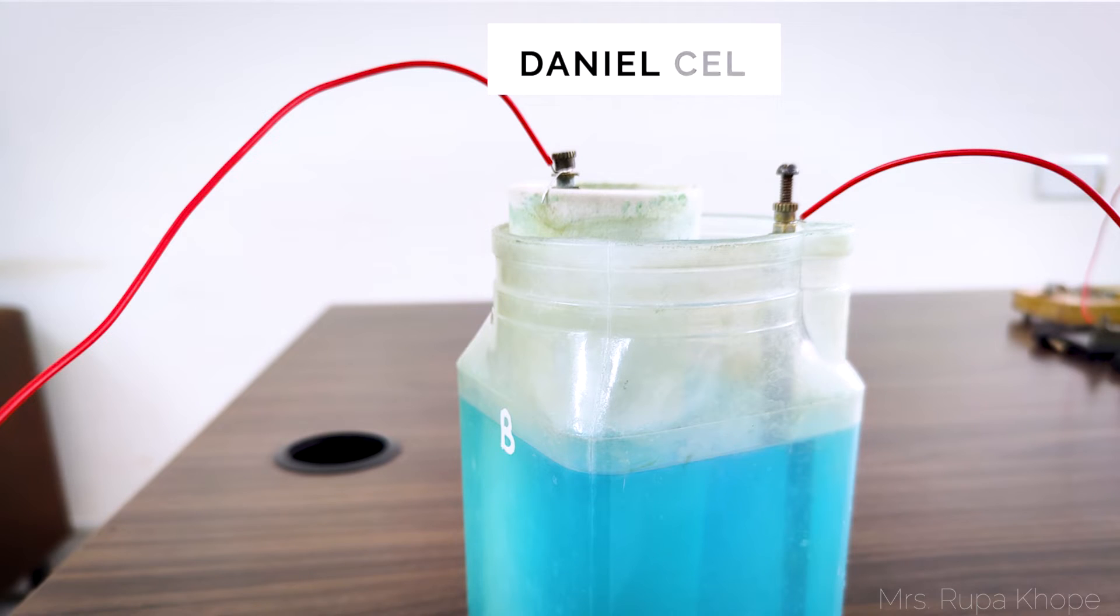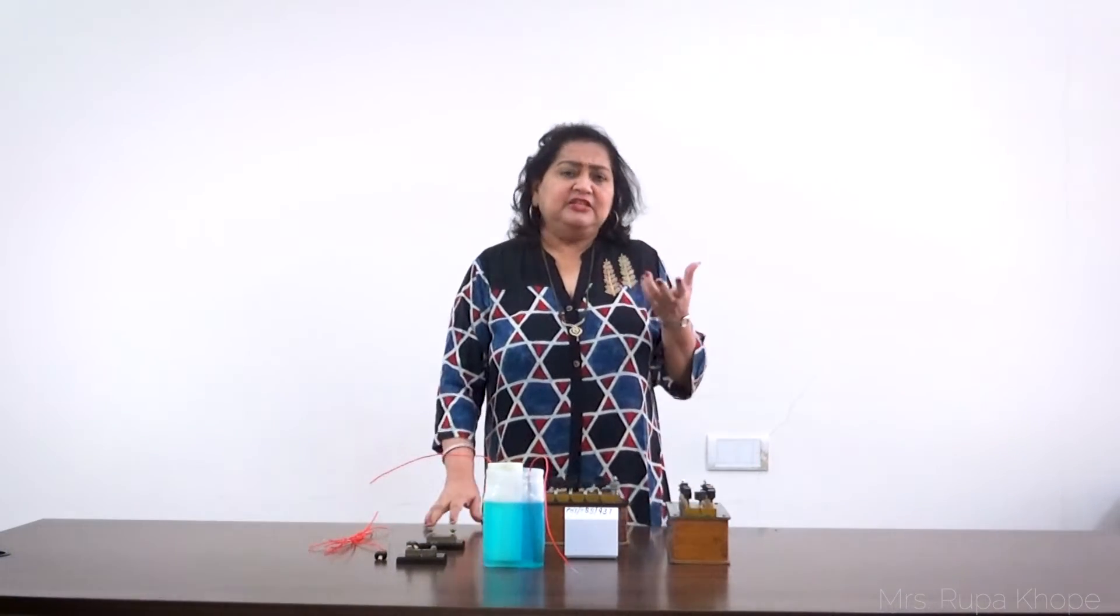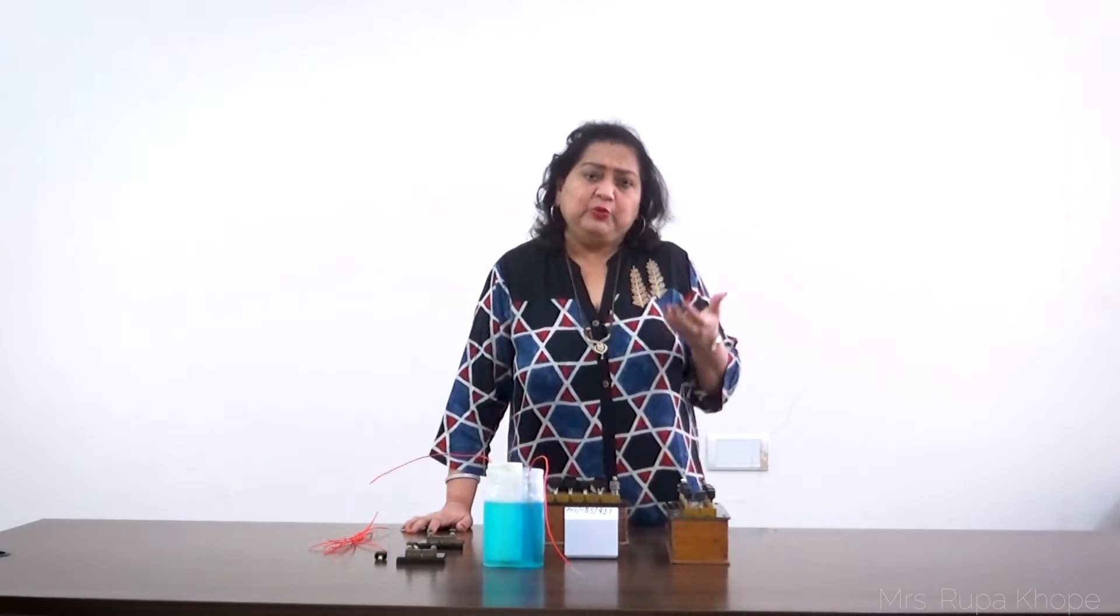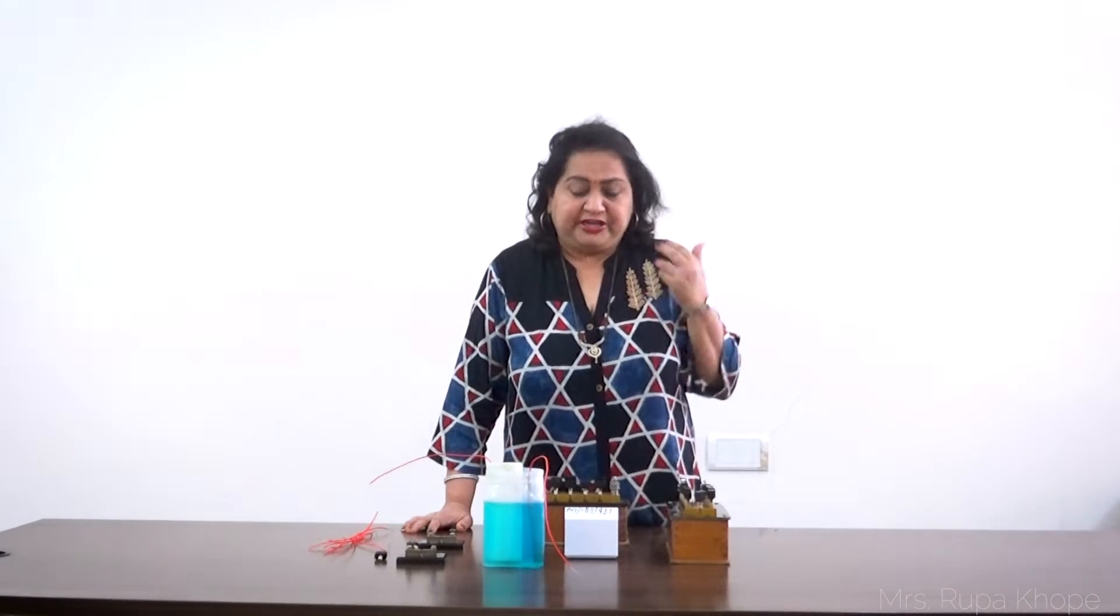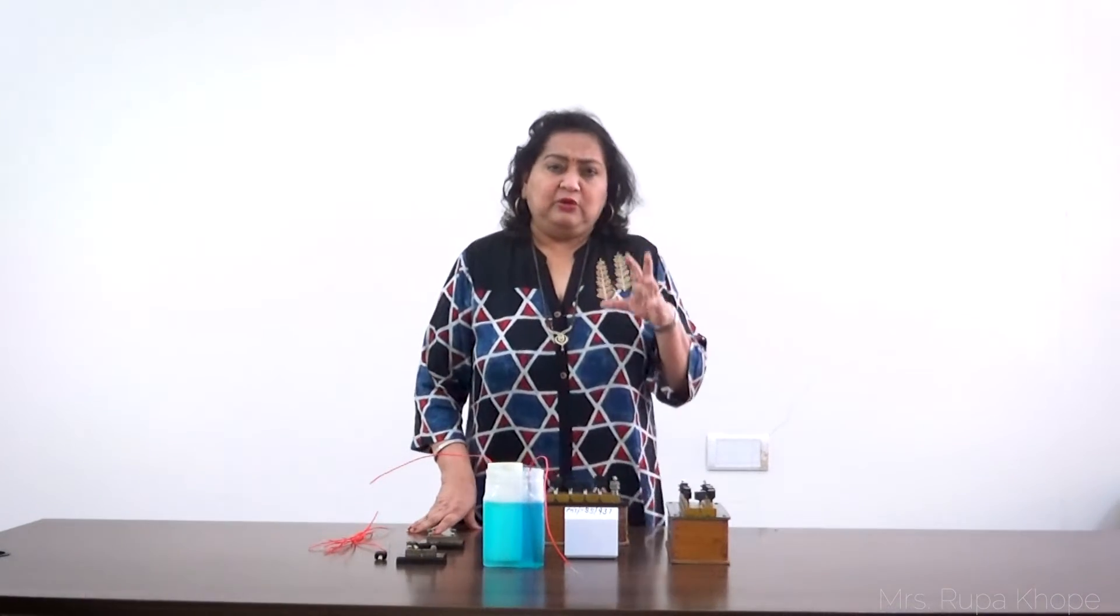This is a Daniel cell. What is a Daniel cell? The copper sulfate blue color is the electrolyte solution and it is copper rod as positive and zinc rod as negative. So this is my zinc rod and this is my copper rod. Remember one thing, Daniel cell EMF is in the range of 1 volt, 1 to 1.1 volt for the fresh one.